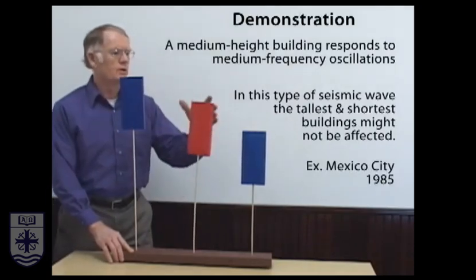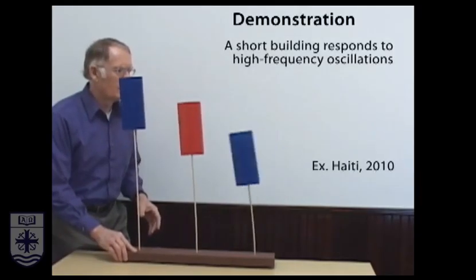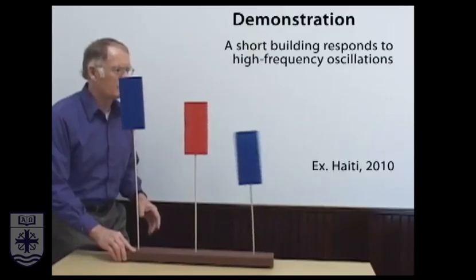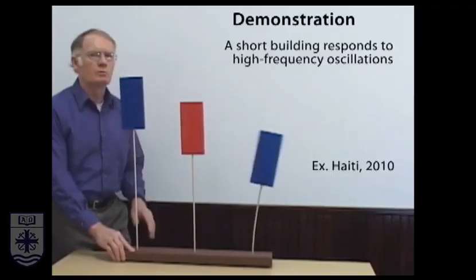To get the short building to oscillate, you need to move the base very briskly back and forth and dial in to the natural frequency of the short building. And we can see that the intermediate and tall buildings are barely moving.